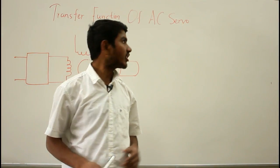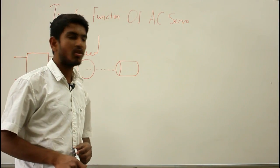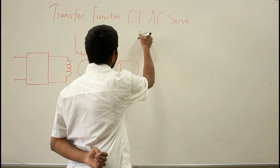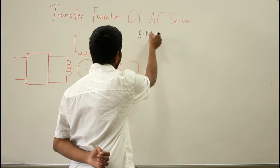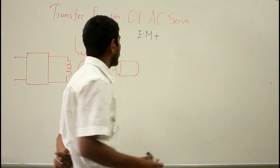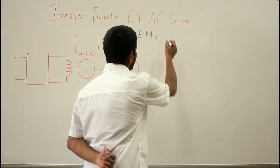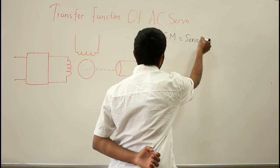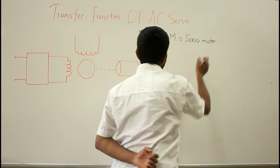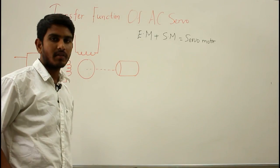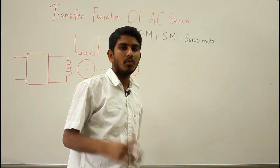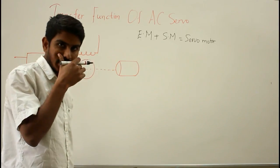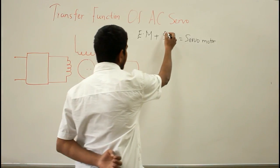In this video let us derive the transfer function of the AC servo motor. A servo motor is nothing but a simple electrical motor when it is operated with the help of a servo mechanism. If the motor's control device associated with the servo mechanism is a DC motor, then it is referred to as a DC servo motor, and if it is an AC motor, then it is referred to as an AC servo motor.